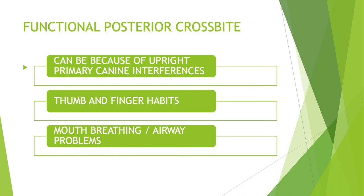In functional posterior crossbite, the cause is a shift in the lower jaw while closing. This shift can be caused by upright primary canine interferences — the pointed tip of the canine causes interference as the lower jaw closes, so the lower jaw shifts to a position without interference, leading to a crossbite. Thumb or finger habits can also cause lower jaw shifts, similarly resulting in a posterior crossbite.